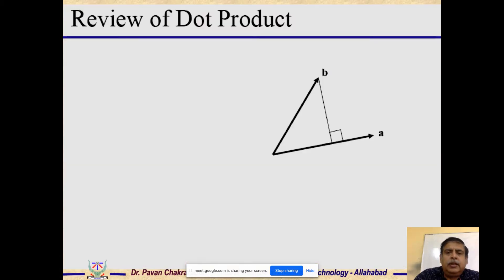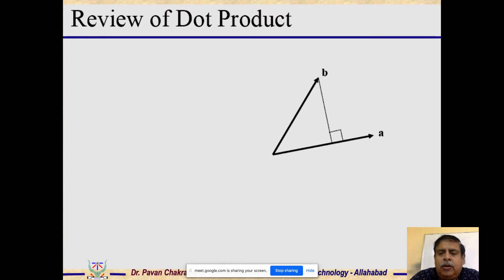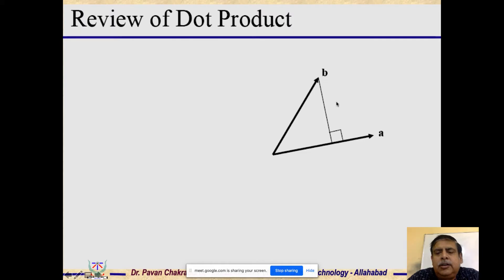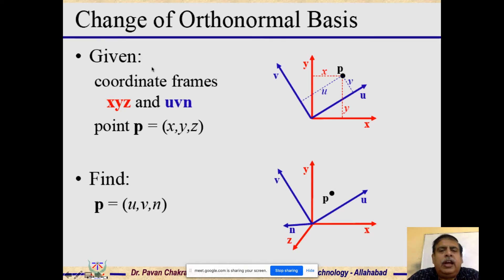If I have two vectors a and b, I can easily see that the contribution of b on a would be the projection of b on the vector a, which is b·cos(θ) where θ is the angle between the vectors a and b. Equivalently, the scalar product b dot a also gives the contribution of b on a.